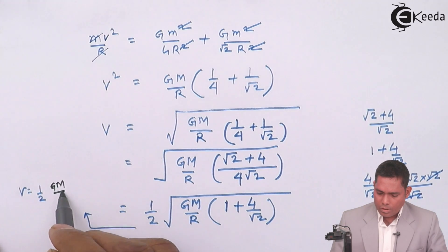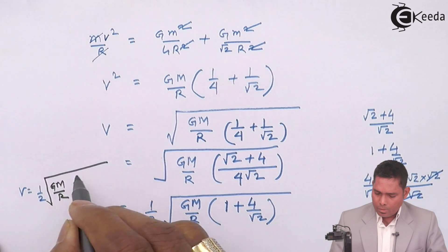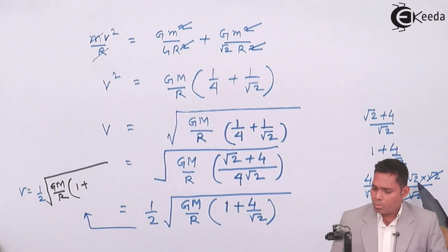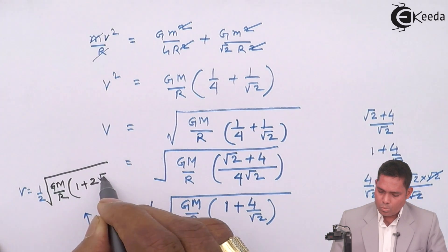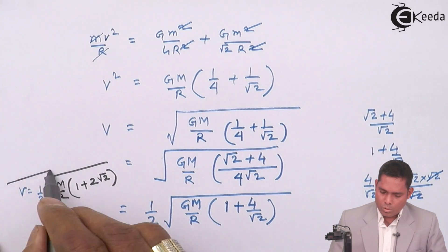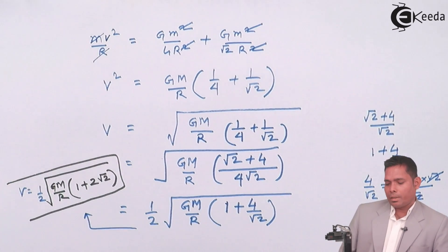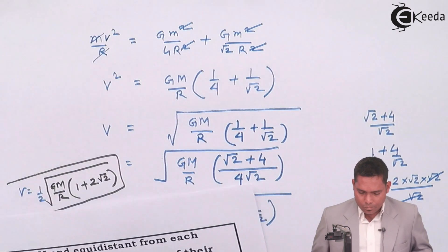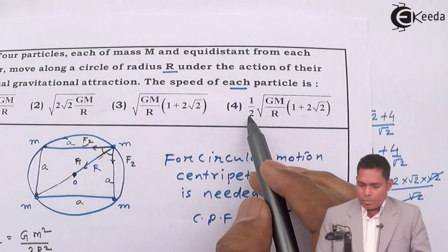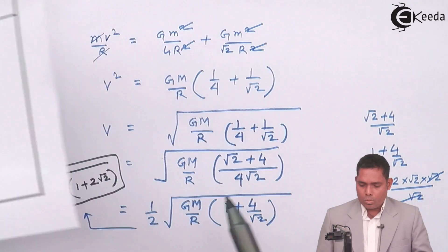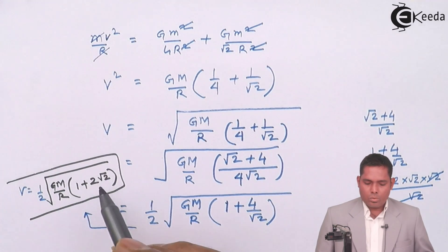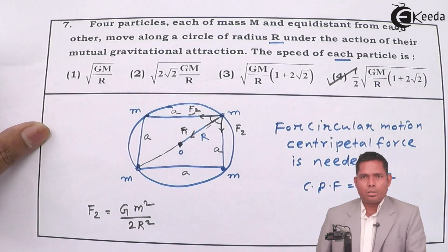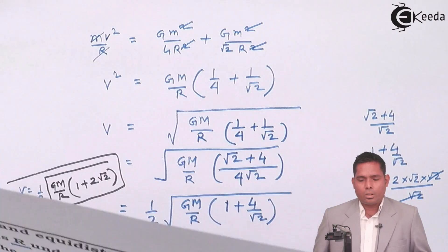Simplifying further: 4/√2 = 2√2, so the bracket becomes 1 + 2√2. Therefore V = (1/2)√(GM/R · (1 + 2√2)). Checking the options, option number 4 is the correct answer to this question.